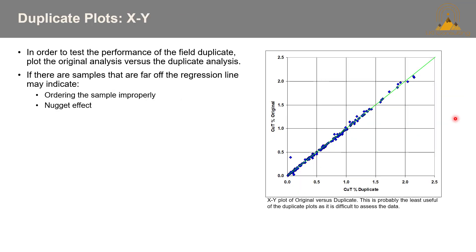The XY duplicate plot is a very simple plot whereby you plot the duplicate versus the sample. If samples are far off the regression line, it could indicate that ordering of the sample was done improperly — for instance, your duplicate for sample 33 was placed in position for sample 60 — or it could be due to a nugget effect. It's considered a least useful plot because it's really difficult to assess the data, as it would be onerous to investigate each point individually.